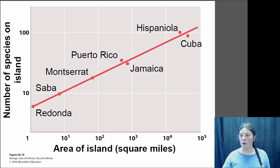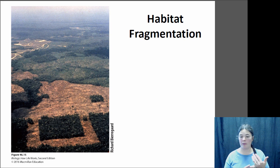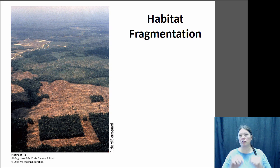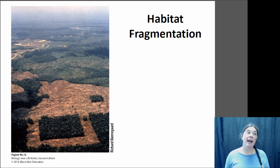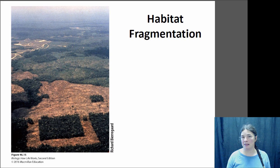Why do we care? This might be hypothetically interesting for understanding islands in the ocean, but human development creates islands on land through what we call habitat fragmentation. When we make farm fields, or there's urbanization or other development on the natural landscape, we break up habitat into little chunks — a little patch of forest here, a little patch there. What's the biodiversity going to be like in each of these fragments, and how can we maintain species, like cougars or bobcats, when we fragment the landscape?